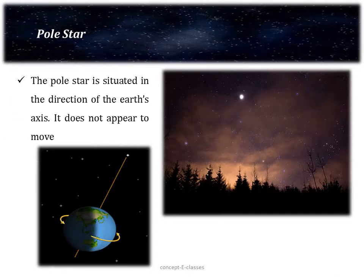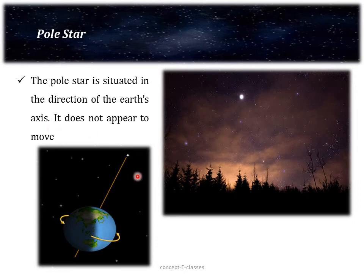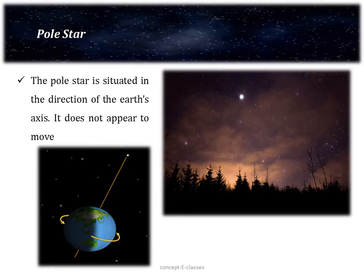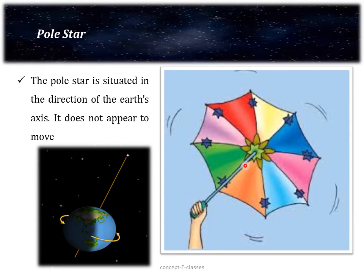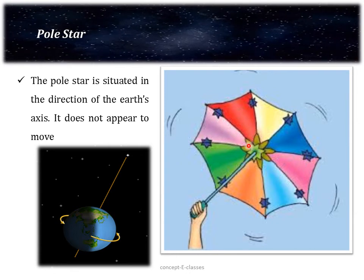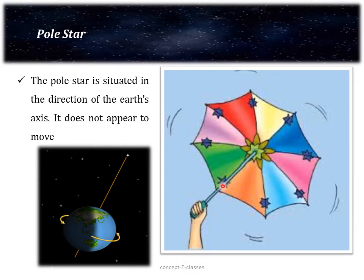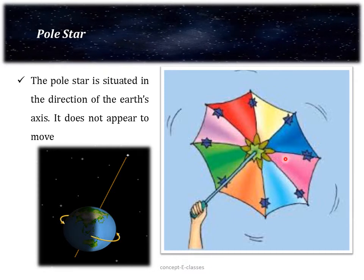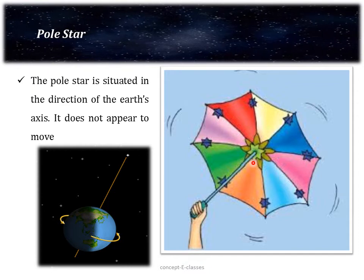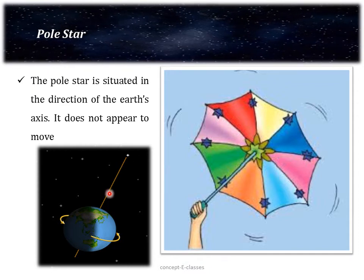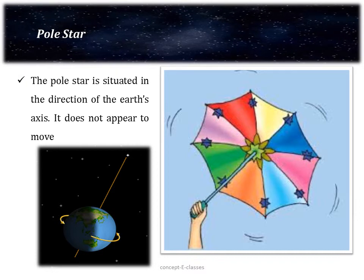There is a star that does not appear to move — it is the pole star. It is situated in the direction of the earth's axis, and hence it does not appear to move. We can understand this using a simple activity: take an umbrella and open it. Make some stars out of paper and paste one star at the position of the central rod of the umbrella and others at different places. Now rotate the umbrella by holding its central rod. The star at the central rod does not appear to move. Similarly, since the pole star lies close to the axis of rotation, when the earth rotates, the pole star does not appear to move.